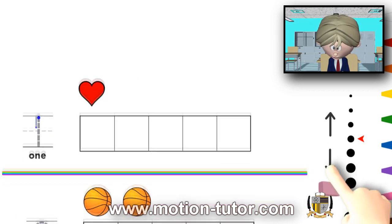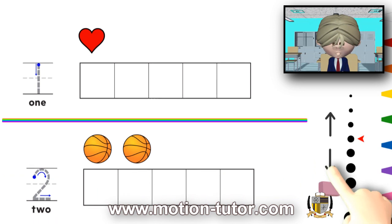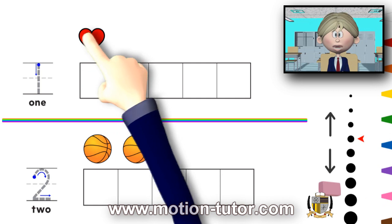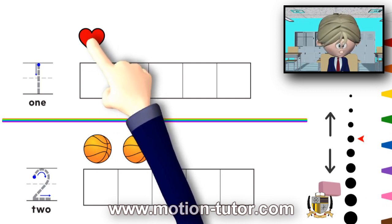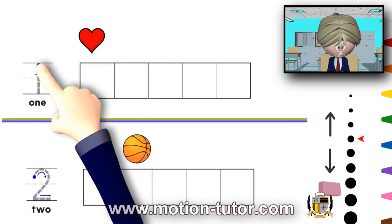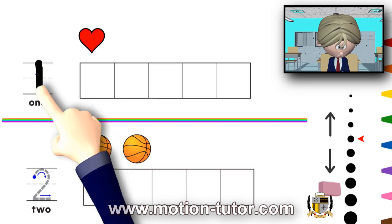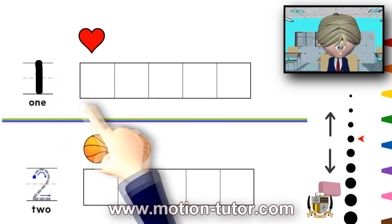Now, let's look further at 1 and 2. Remember, 1 is just the only thing. So, this heart represents one heart. And remember how we write 1. We start from up here and go down.